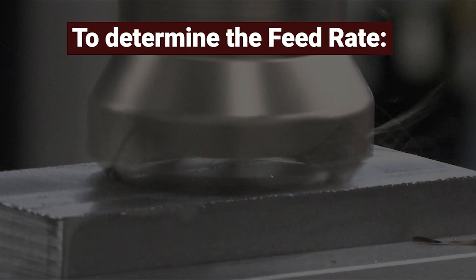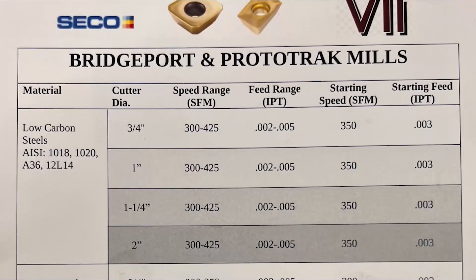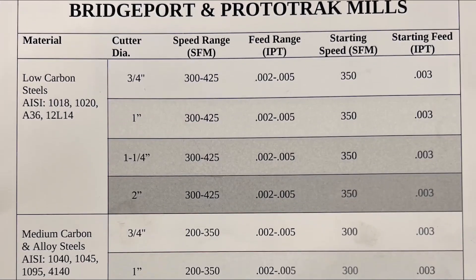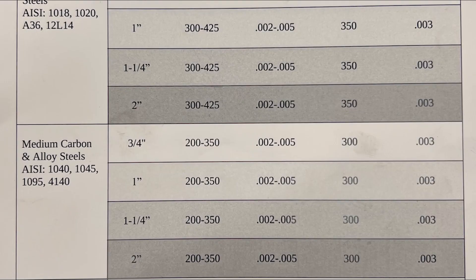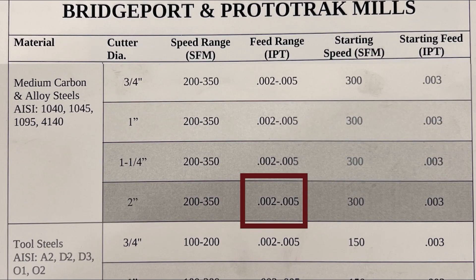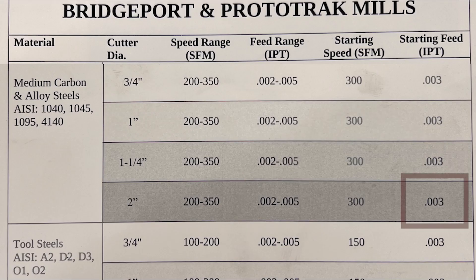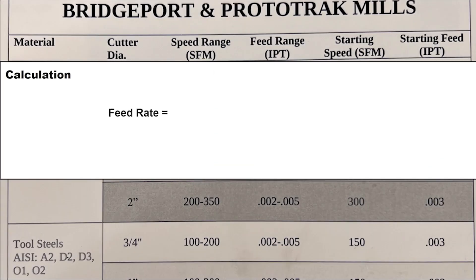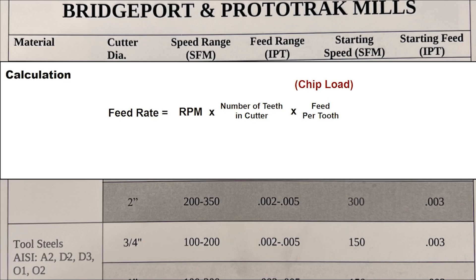To determine feed rate, we again consult our technical data chart for our specific application. It shows a feed per tooth range of .002 to .005 per tooth and a recommended starting point of .003. Feed rate is calculated by multiplying RPM times the number of teeth in the cutter by the feed per tooth, which is also known as chip load.